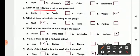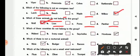Then, which of the following is not an evergreen tree, it is larch, beech, maples, the answer is willow. Now, which of these animals do not belong to this group, wolf, lion, puma, panther, so it is wolf.